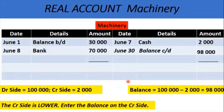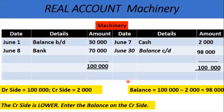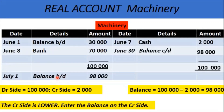Next, we total the account and it should have the same amount on both sides — 100,000. Then in the next period, we bring down the balance. Notice it is now brought down.